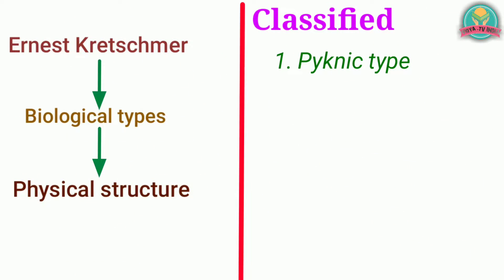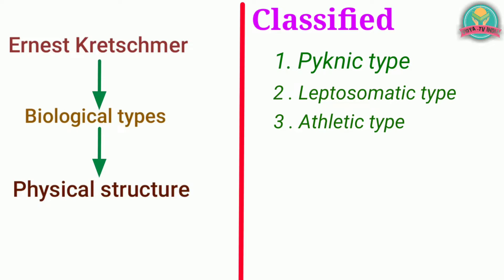Number 1: Picnic type. Number 2: Leptosomatic type. Number 3: Athletic type. Number 4: Dysplastic type.